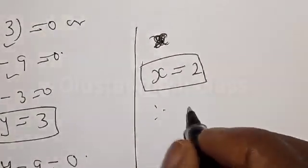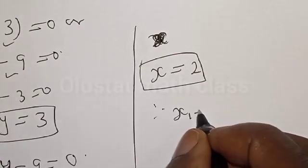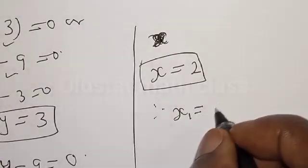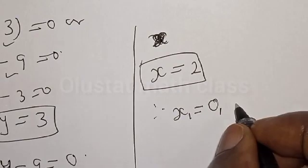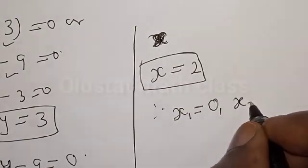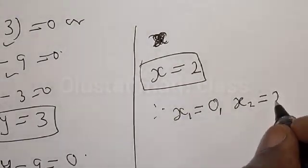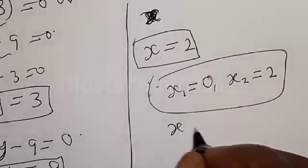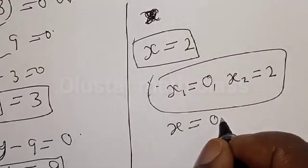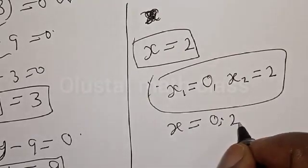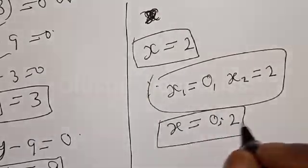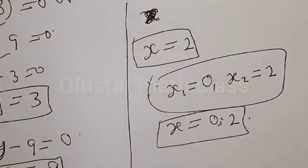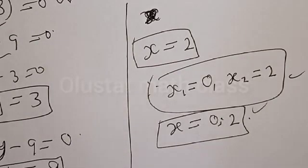Therefore the final values of x are: x₁ equals 1 and x₂ equals 2, or x equals 1 comma 2. Those are the values of x. If you have enjoyed the class, please don't forget to like, share, comment, and subscribe. Thank you.